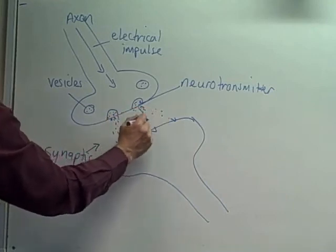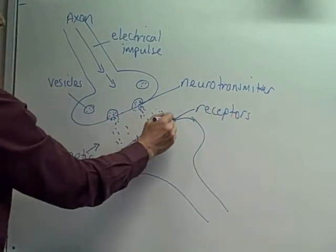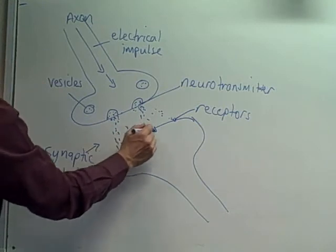This neurotransmitter then diffuses across the gap and binds with receptors on the second neuron.